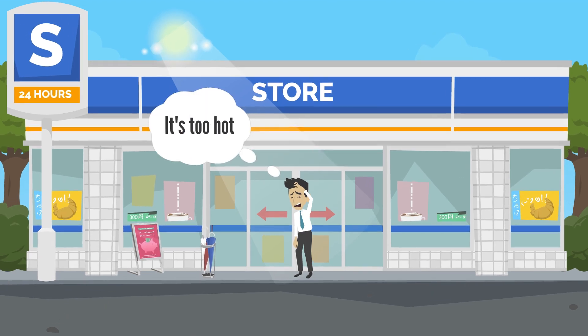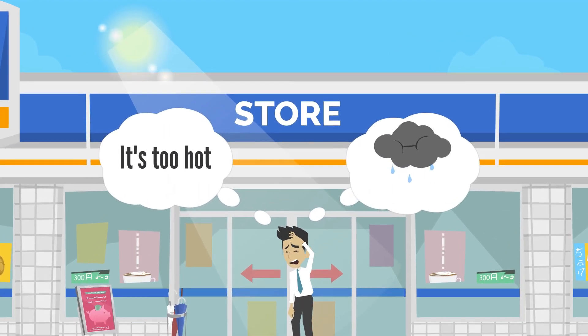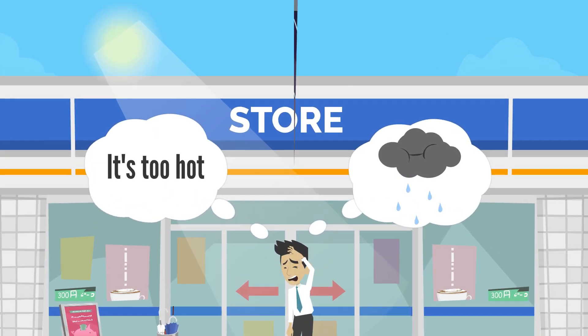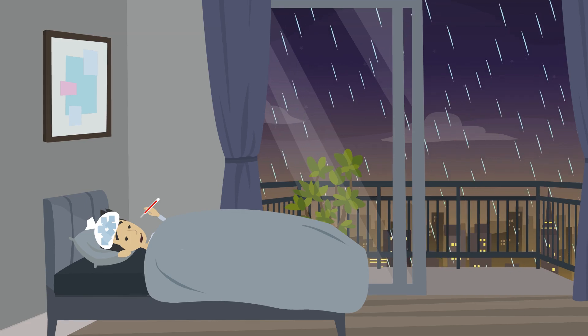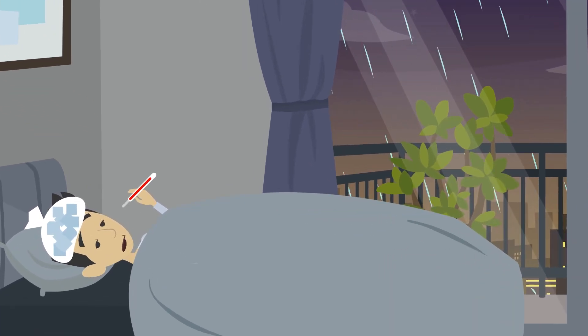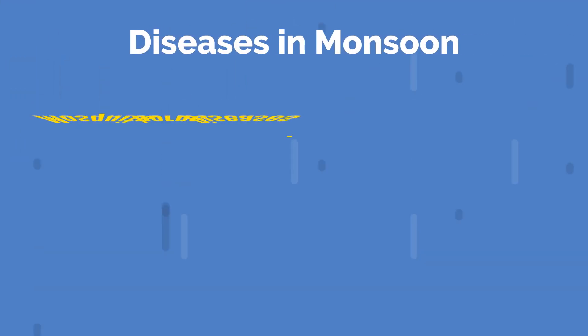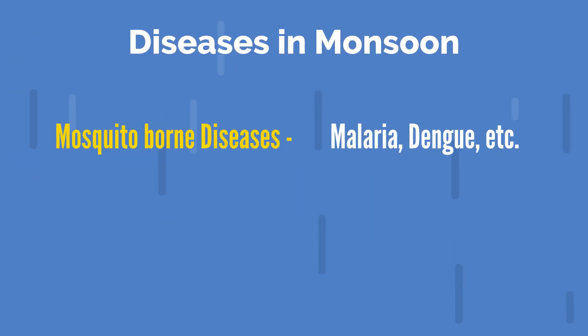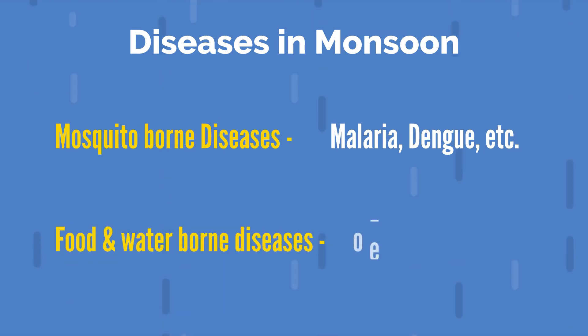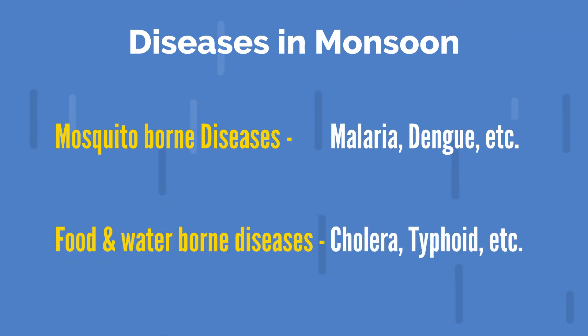While rain after a hot and humid day can be a desirable thing, the fact cannot be denied that rain could bring in some rainy season diseases. During monsoon, our immune system is weakened and this results in many diseases. This climate change causes different types of monsoon diseases such as mosquito-borne diseases like malaria, dengue, etc., and food and waterborne diseases like cholera, typhoid, etc.